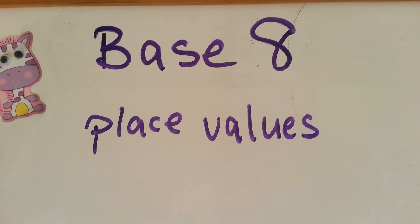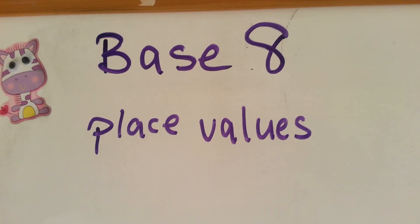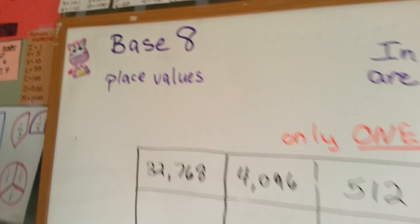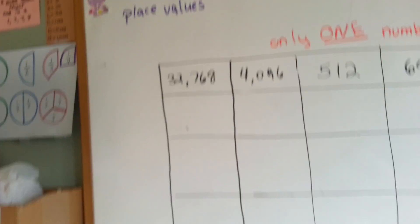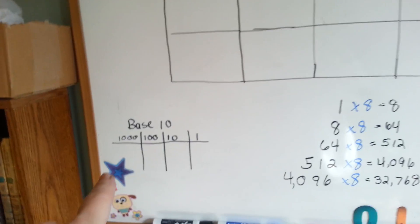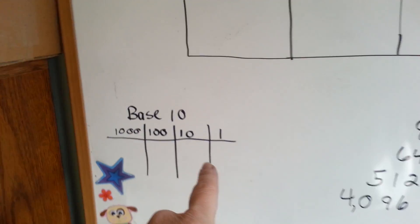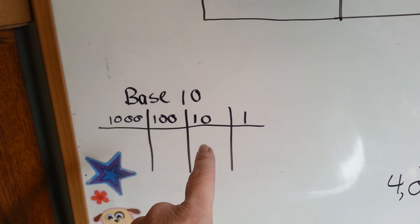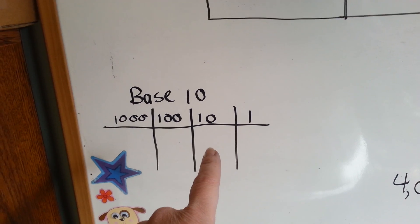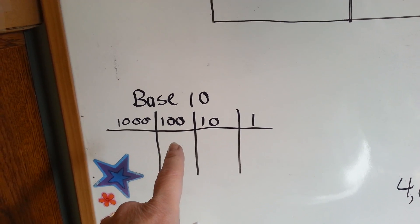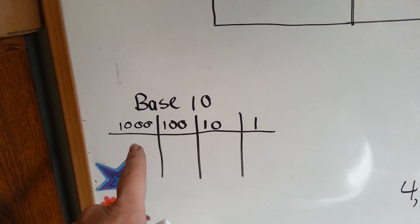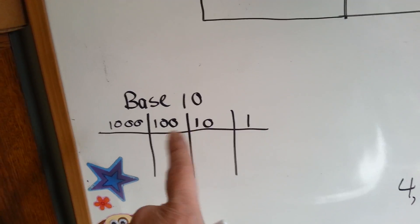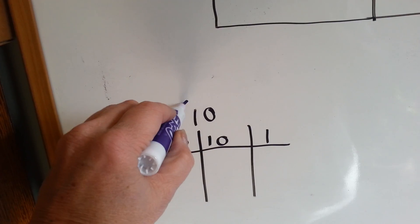Base 8 place values. The place values that we use in our everyday math is base 10. In the first column we have ones, the column to the left of that is tens, to the left of that is hundreds, and then thousands. The way we get that is we multiply by ten.